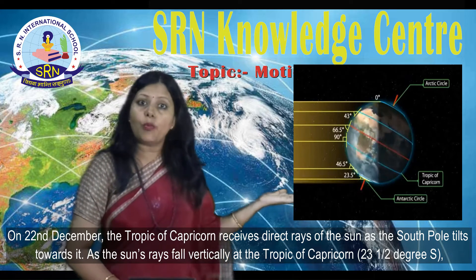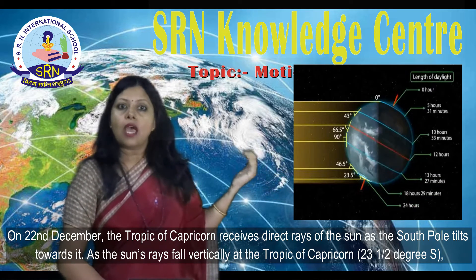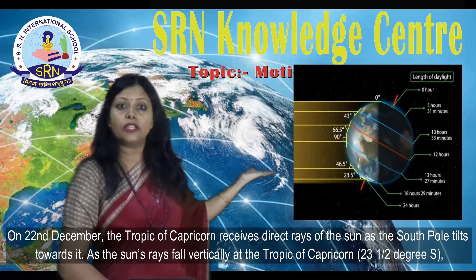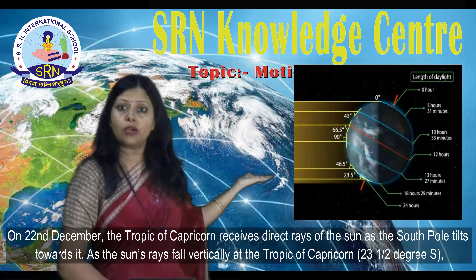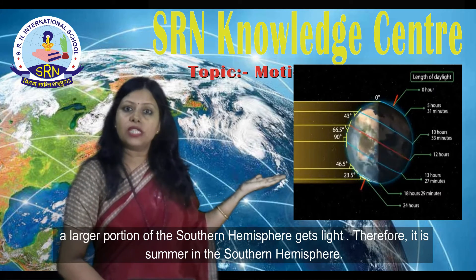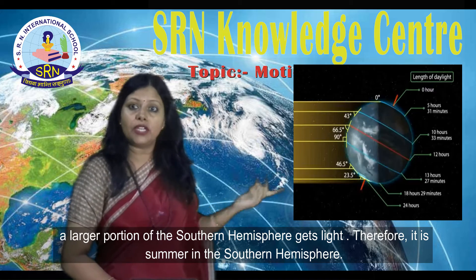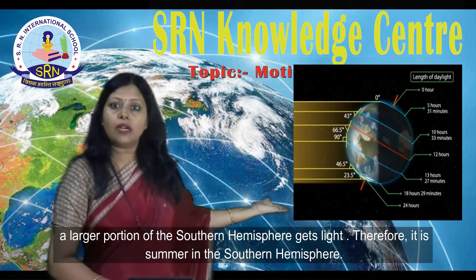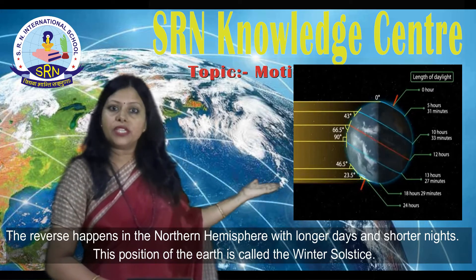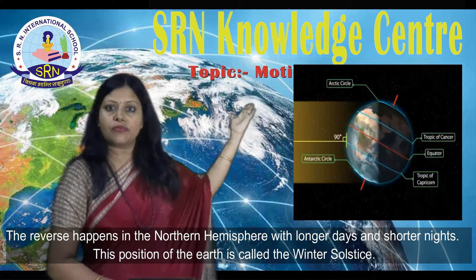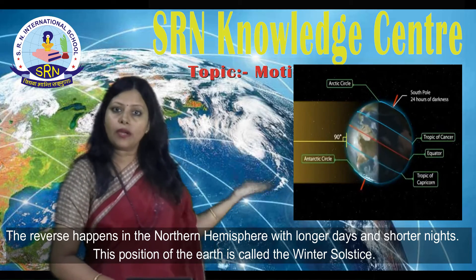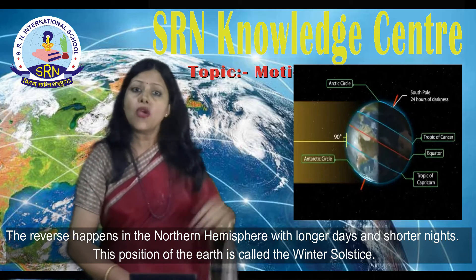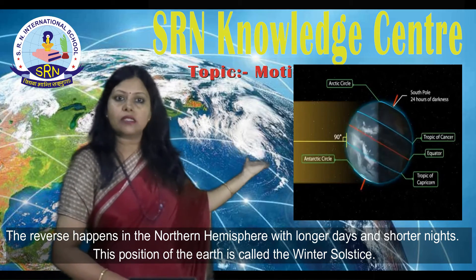On 22nd December, the Tropic of Capricorn receives direct rays of the Sun as the South Pole is tilted towards it. As the Sun's rays fall vertically on the Tropic of Capricorn, a larger portion of the southern hemisphere gets light. Therefore, it is summer in the southern hemisphere, and the reverse happens in the northern hemisphere, with longer nights and shorter days. This position of the Earth is called the winter solstice.